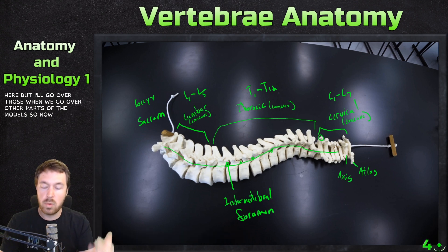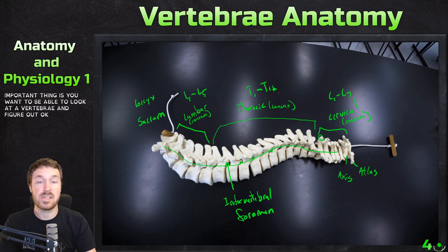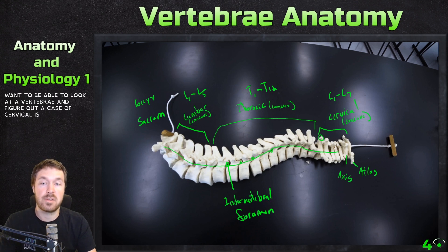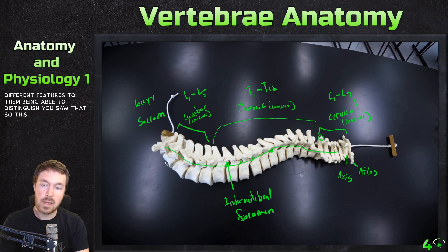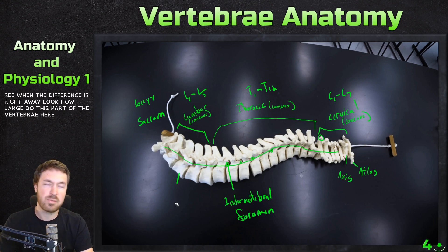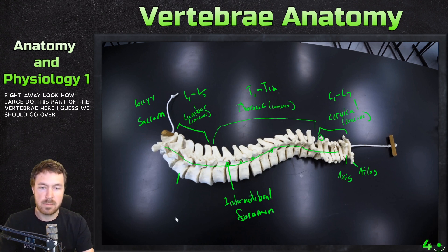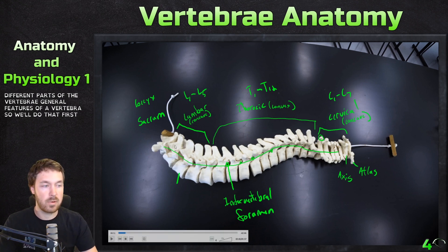One important thing is you want to be able to look at a vertebrae and figure out — is this cervical, is this thoracic, or is this lumbar? They have different features that allow you to distinguish each. Let's go over the general features of a vertebrae first before talking about the differences in each one.